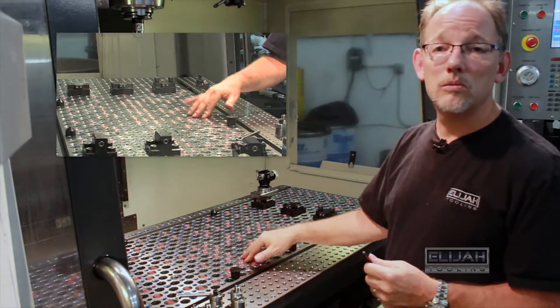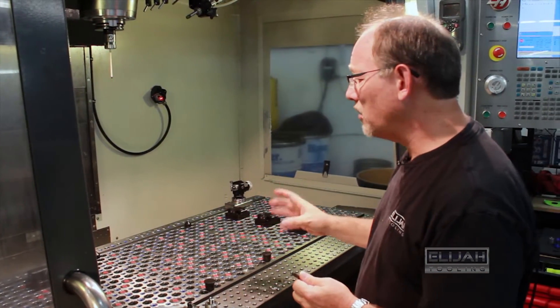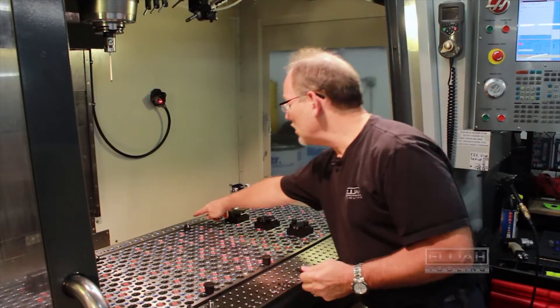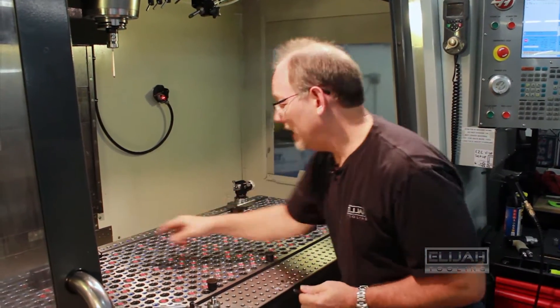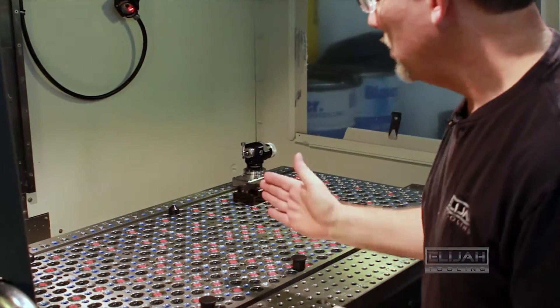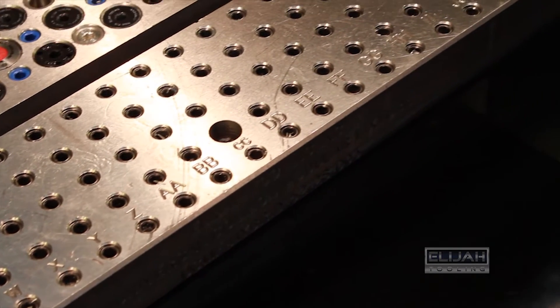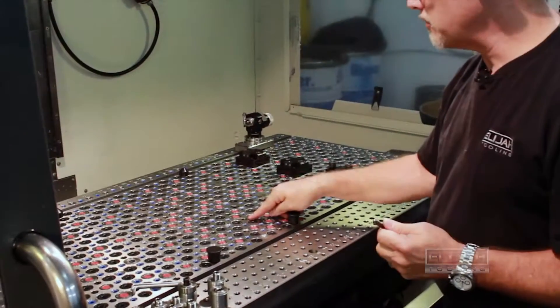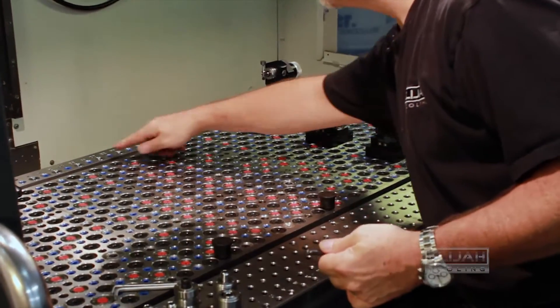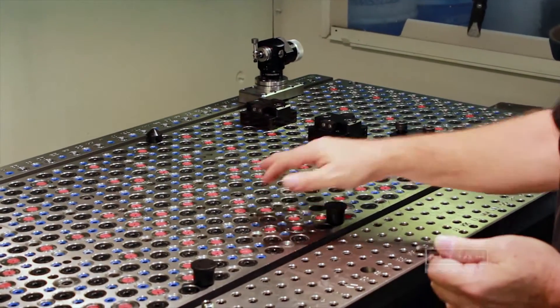Sometimes we can even do better than that. This fixture also incorporates another feature that's really nice. As you can see along the outside and along the edges, we have the rows and columns numbered and lettered so that we know exactly which location this is. For example, this hole is 10 E.